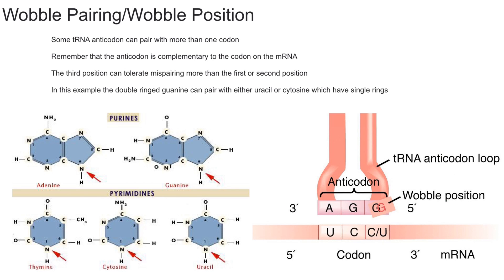Ultimately, what I hope you got out of this is that the wobble pairing refers to the third base in an mRNA codon that can undergo non-Watson-Crick base pairing with the first base of a tRNA anticodon. Or in simpler terms, some tRNA anticodons can pair with more than one codon as shown right here. You also have to remember that it's in the third position.